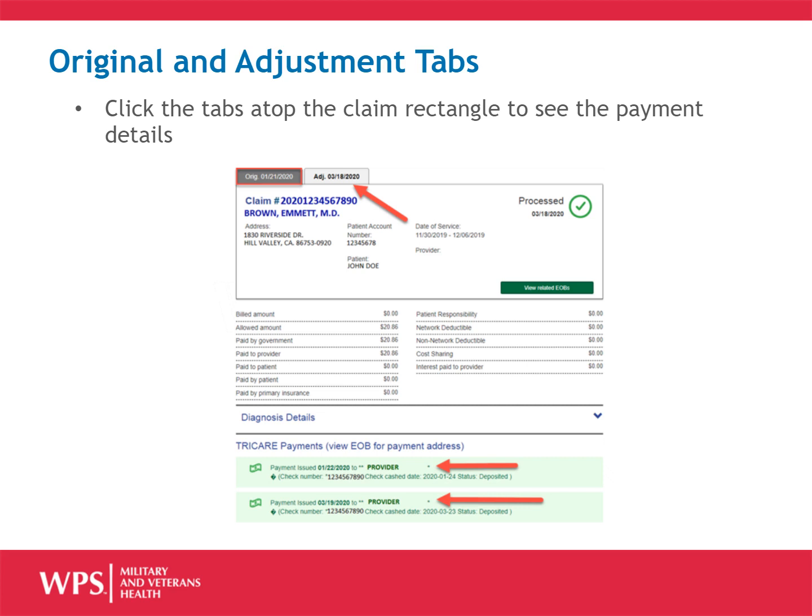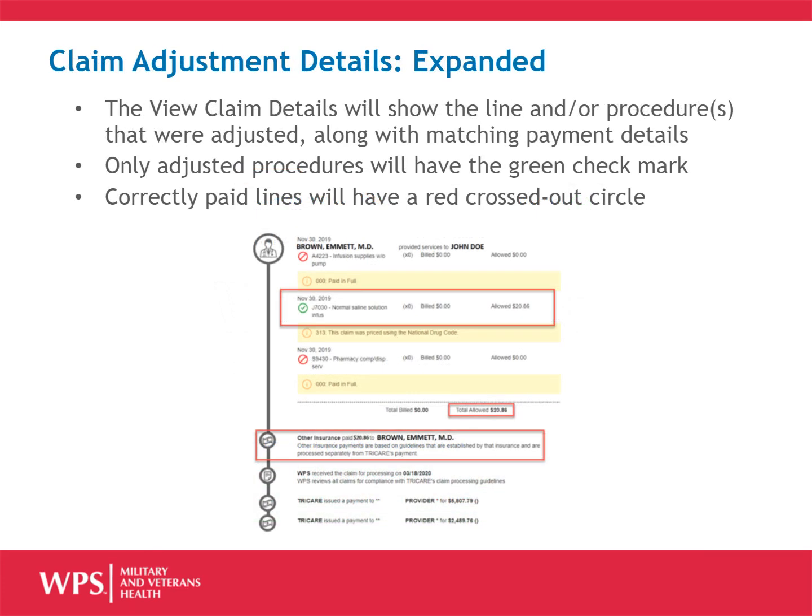Click the tabs atop the claim rectangle to see the payment details. Both the original and adjustment payment details will be displayed in the green highlighted area. Clicking the View Claim Details button will allow you to drill down, and you can see the line and/or procedures that were adjusted. The payment details will also be seen there.